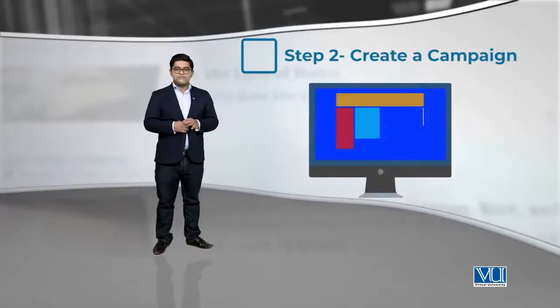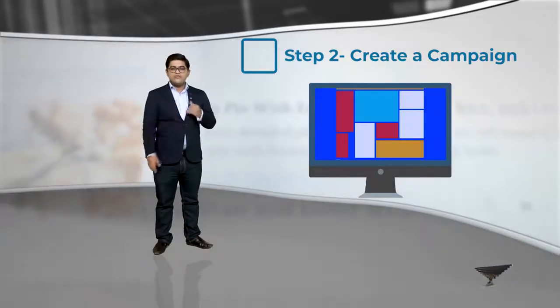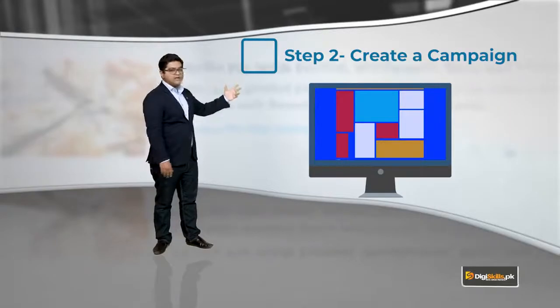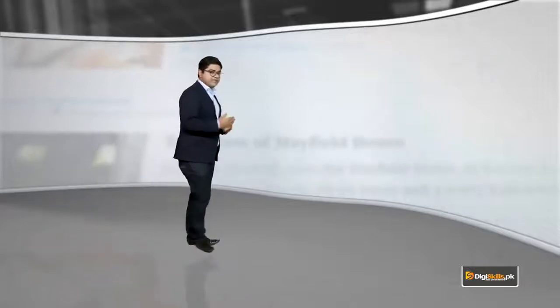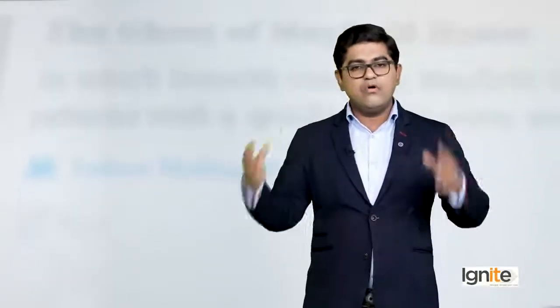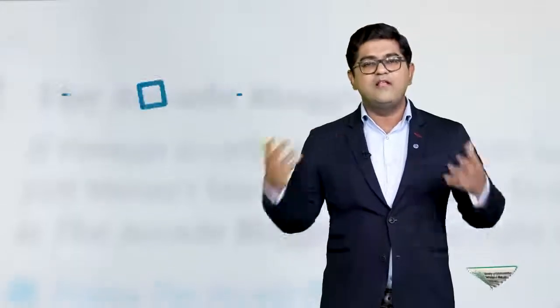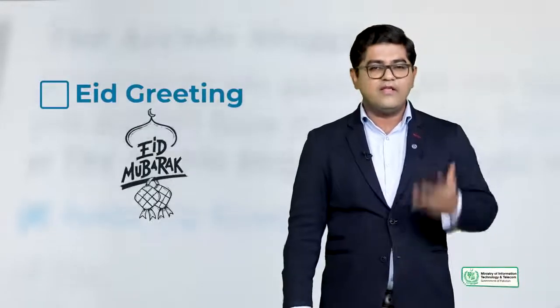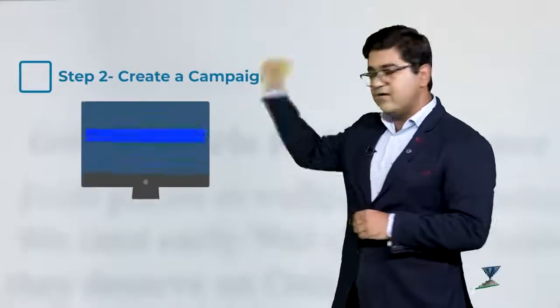Number two is to create a campaign. A campaign will have all content — bilkul waise hi jis tarah aapke WordPress ke blog pe content hota hai. Isi tarah aapke is email campaign mein there will be a whole content, jis pe aap batayenge ke kya nayi cheez hai. Ek bahut achi example hai jis tarah seasonal greetings hoti hain — Eid ki ho gai, Christmas ki ho gai. Toh us pe aap ek content bana ke apni email mein daalenge. So that's step number two — adding the content.